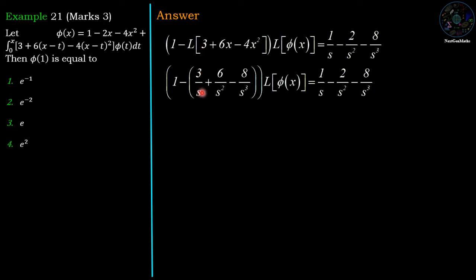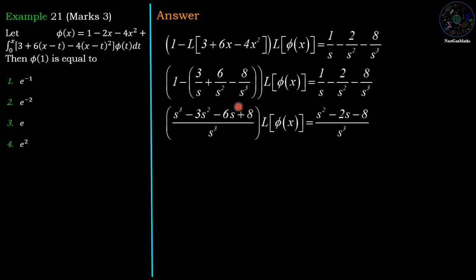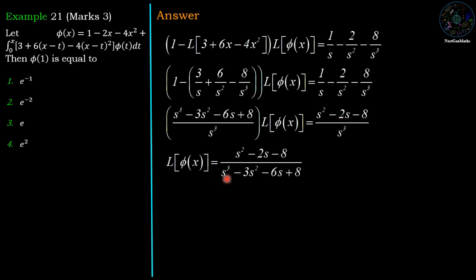Applying Laplace transform: 3/s + 6/s² - 8/s³. Taking LCM as s³, we get (s³ - 3s² - 6s + 8) / s³. Bringing this factor to the other side, Laplace of phi(x) = (s² - 2s - 8) divided by (s³ - 3s² - 6s + 8), and the s³ terms cancel.